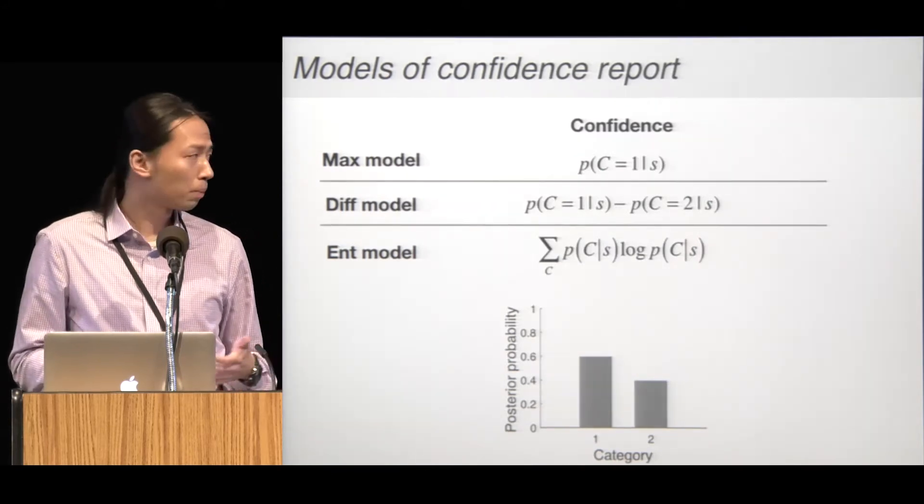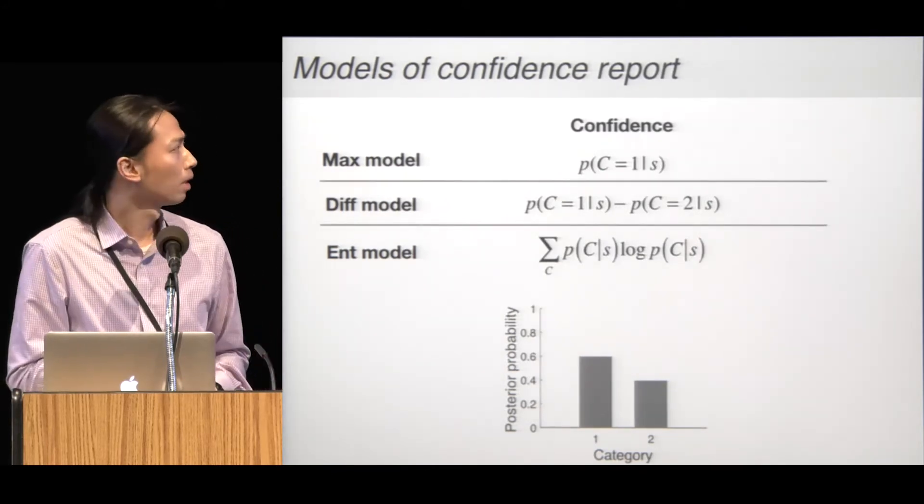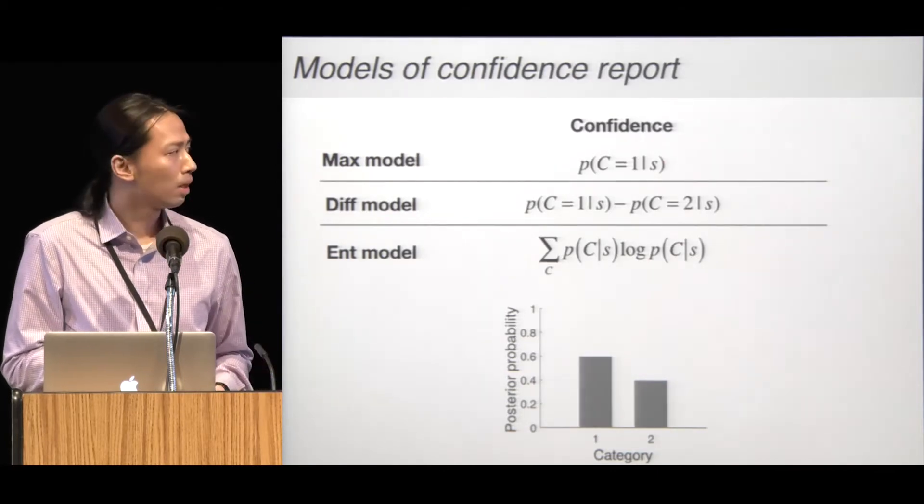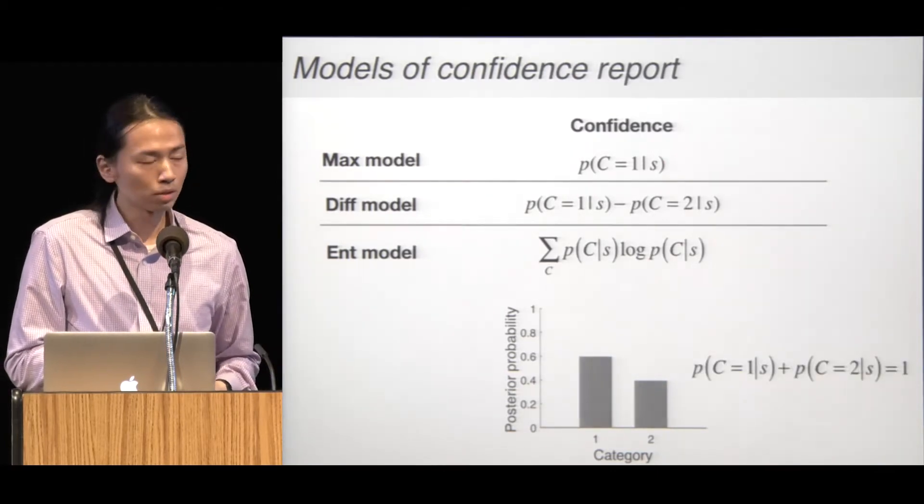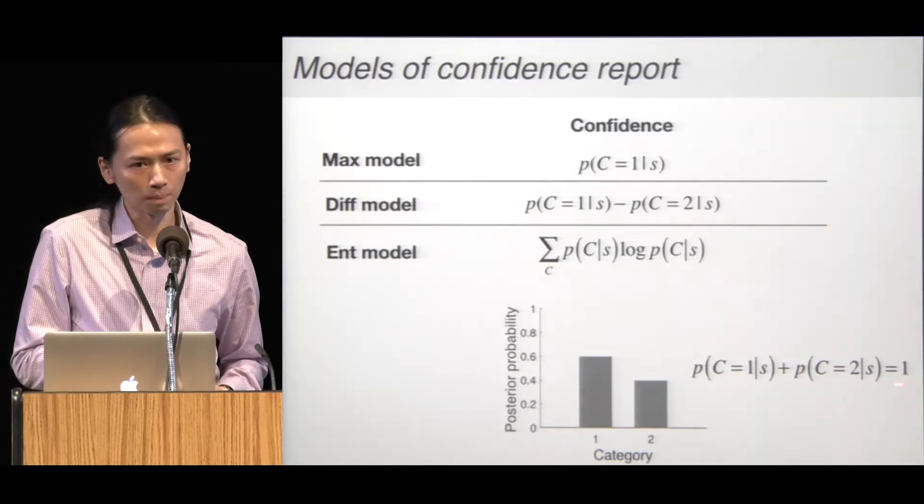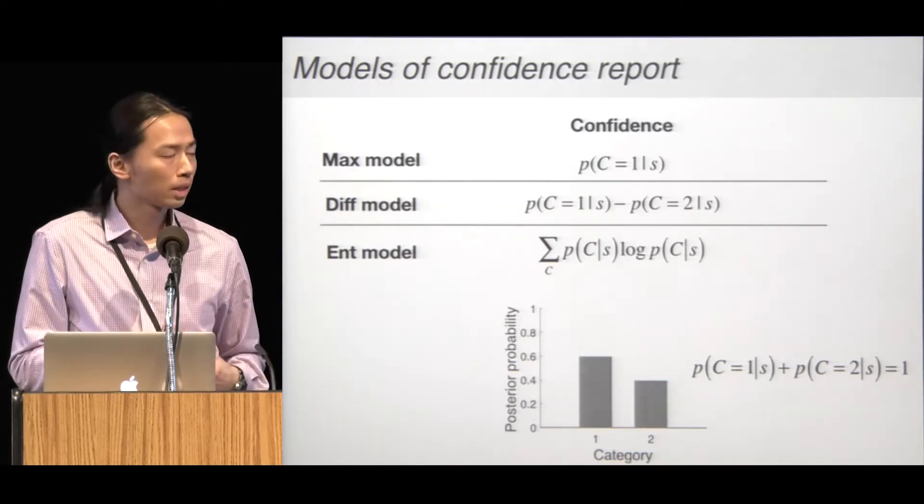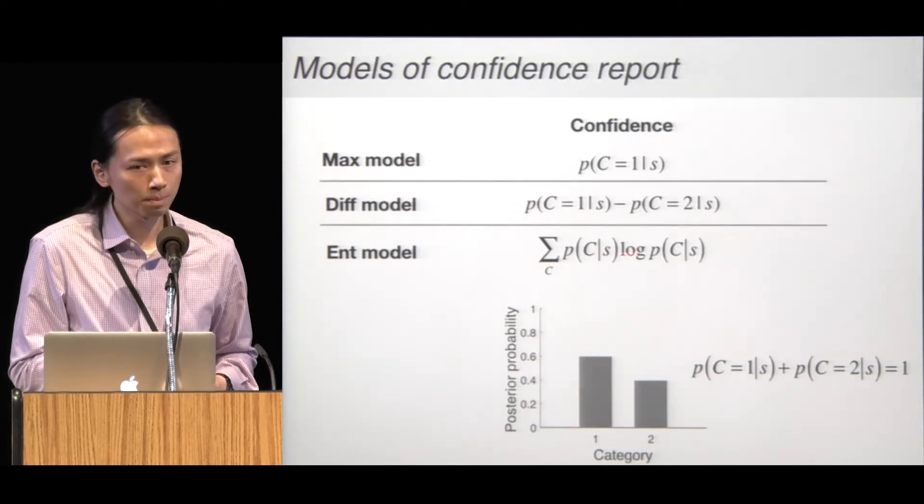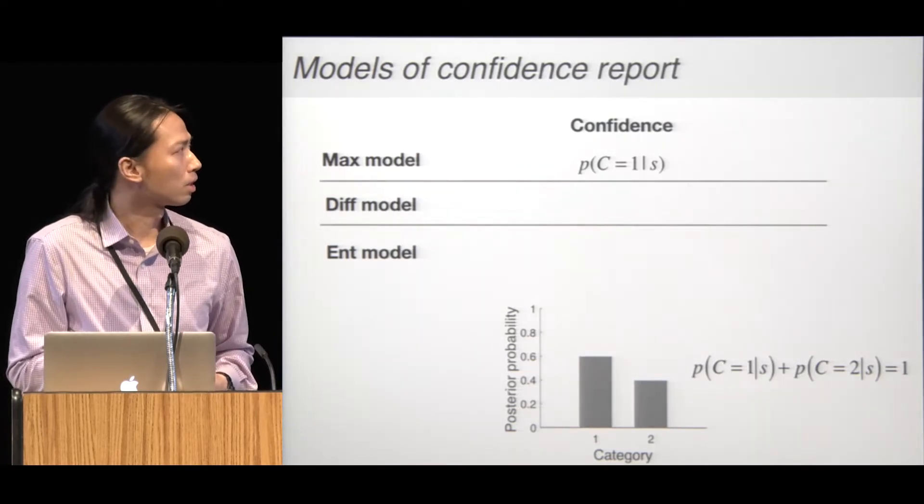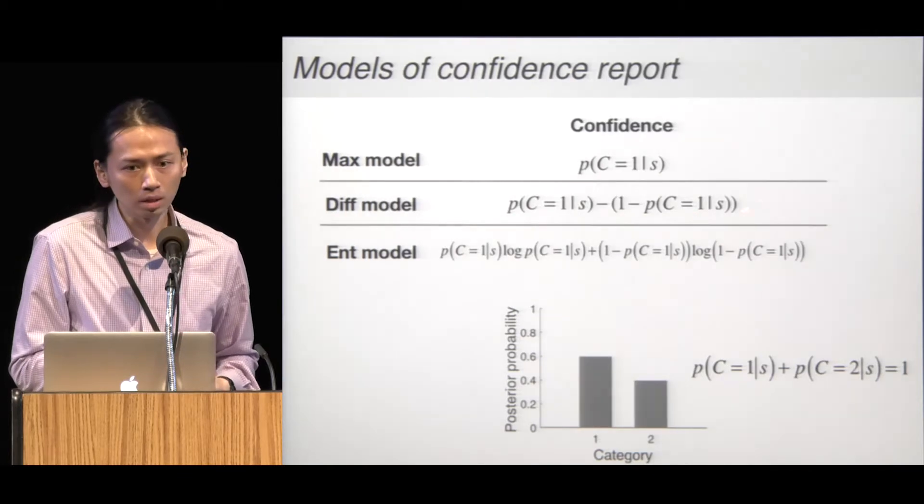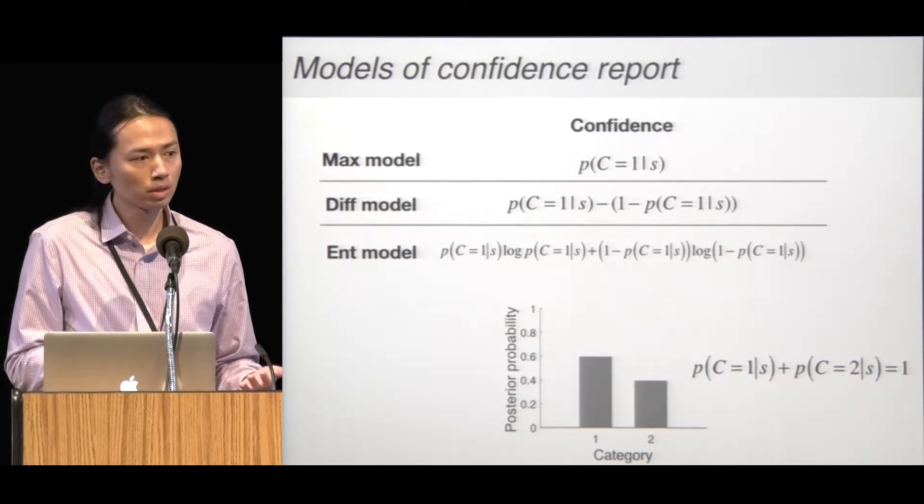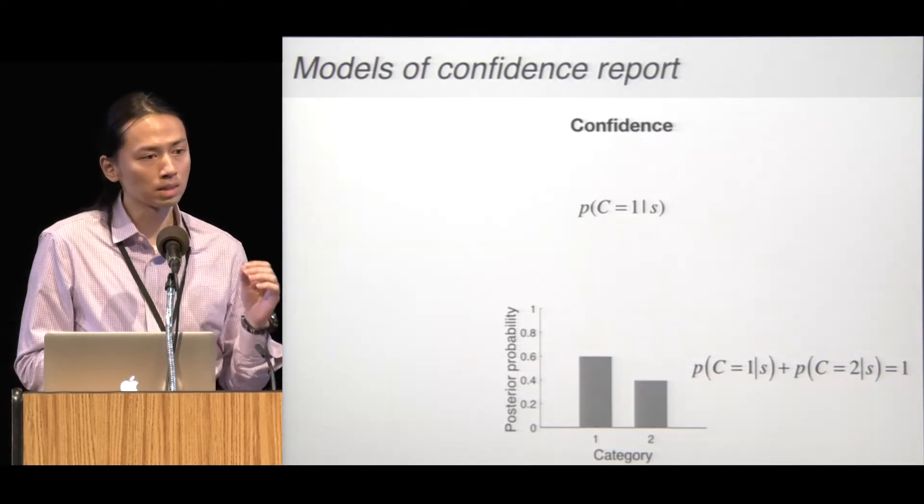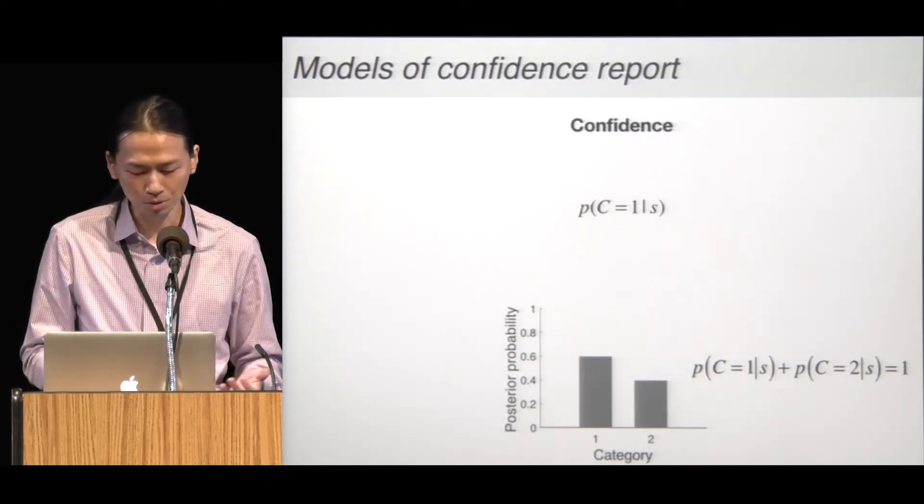What will happen if we just go back to the two-choice task? Even though the three models have different formulations, under the constraint that the two posteriors have to sum to one, we can easily rewrite the difference model and the entropy model to be functions of the probability of the chosen category. So eventually the three models just collapse as one because they all depend on the same single number, and they are not distinguishable.